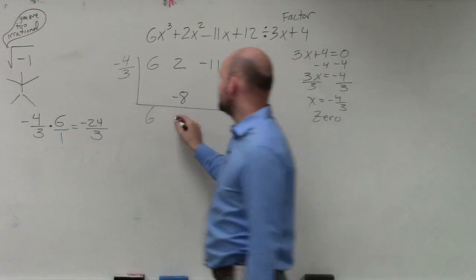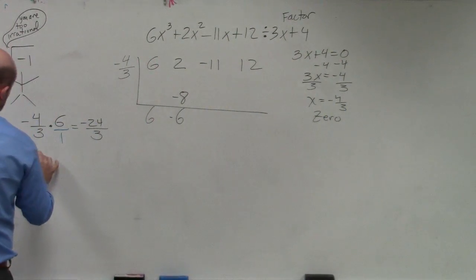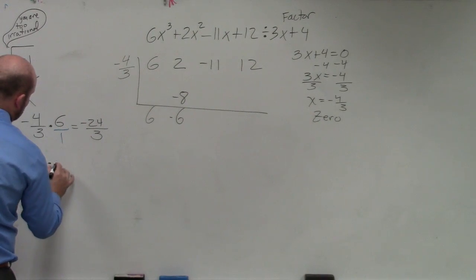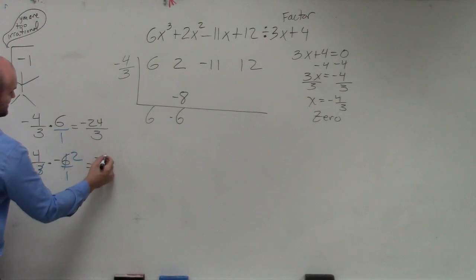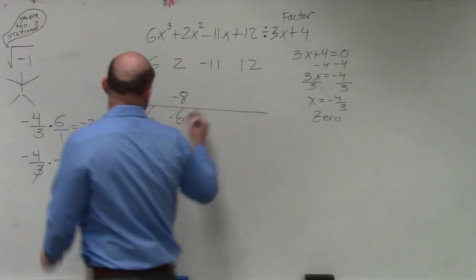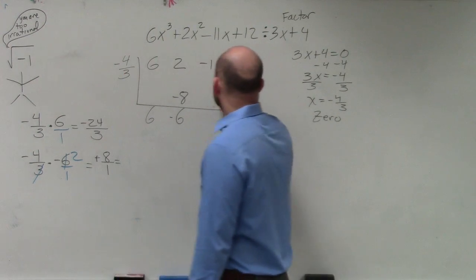2 plus negative 8 is negative 6. Now, negative 4 divided by 3 times negative 6. Rather than always multiplying across and simplifying, we can simplify beforehand as well. 3 divides into 6 two times. Negative 4 times 2 is negative 8 over 1. Oh, positive 8, thank you—is positive 8.